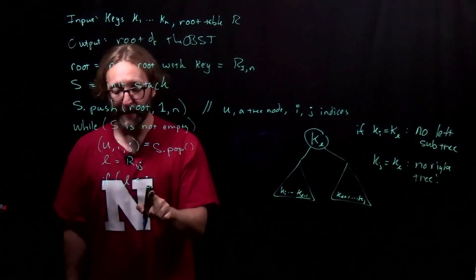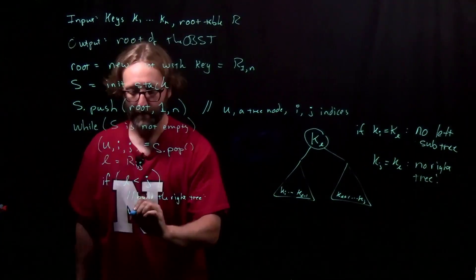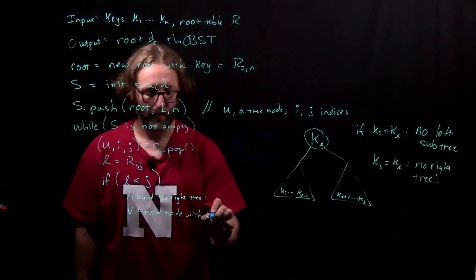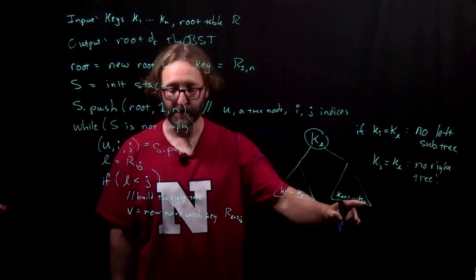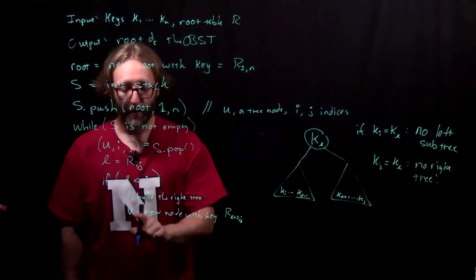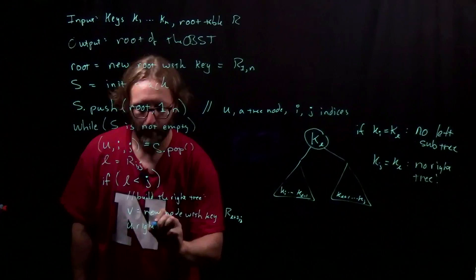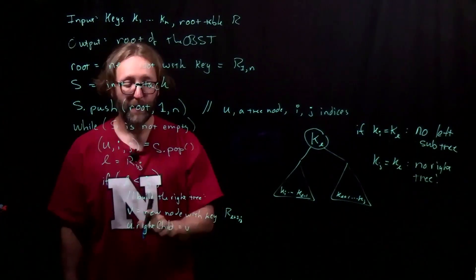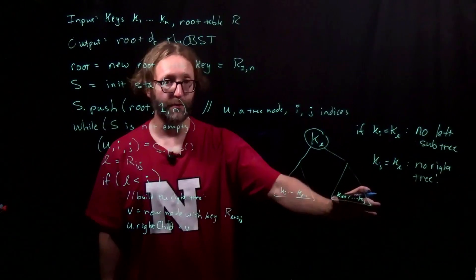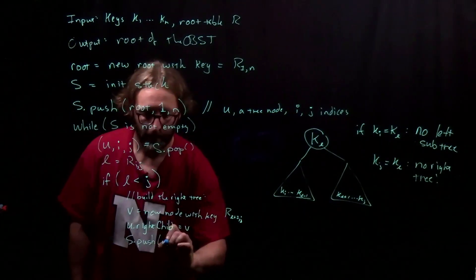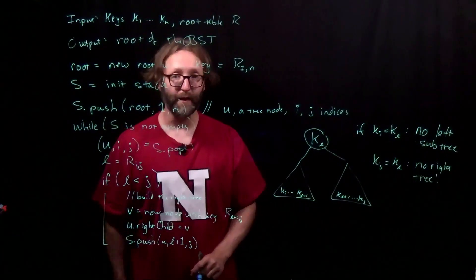When l is strictly less than j, that means that we have nodes over here. We'll create a new node with the key that corresponds to this subtree. This new node will be the right child of our current node. And then we need to make sure that we push this combination onto our stack so that we can then go ahead and take care of the rest of the tree as we go along. That builds the right subtree if it needs to be built.